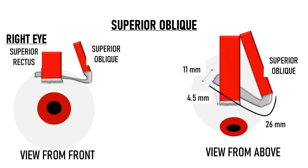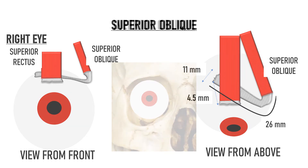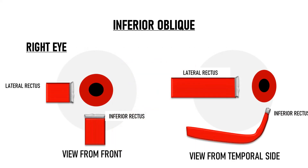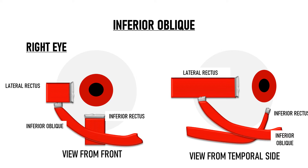The inferior oblique arises from the area adjacent to the lacrimal fossa on the medial side of the orbital floor. It is the only extraocular muscle that arises from the anterior part of the orbit — all others arise from the posterior orbital apex. From its origin, the inferior oblique travels posteriorly and laterally along the orbital floor, crosses the inferior rectus, and inserts temporal to the insertion of the lateral rectus. It is the shortest extraocular muscle at 37 mm long.